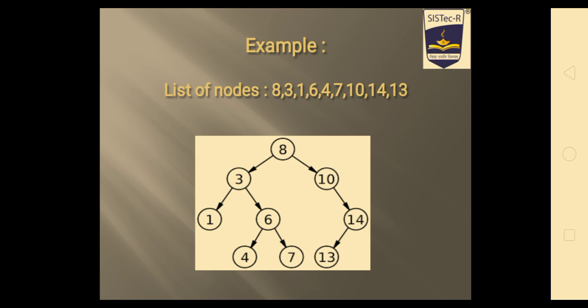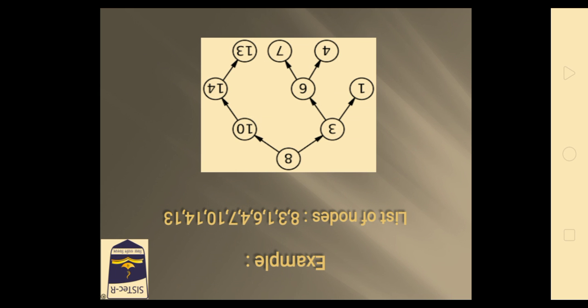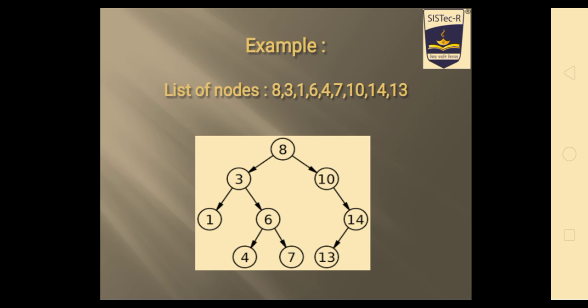6 is less than 8, but greater than 3, so we draw it to the right side of 3. Next, 4 is less than 8, then we move on left, greater than 3, then again right, then less than 6, so we move left. 7 is less than 8, so left, greater than 3, so right, again greater than 7, so we draw it on right of 6.